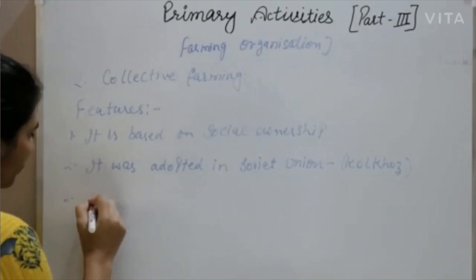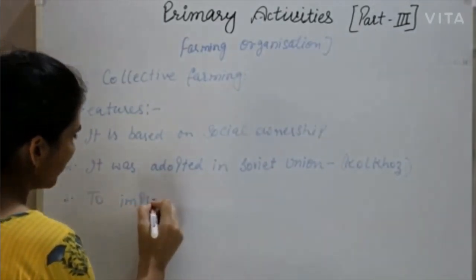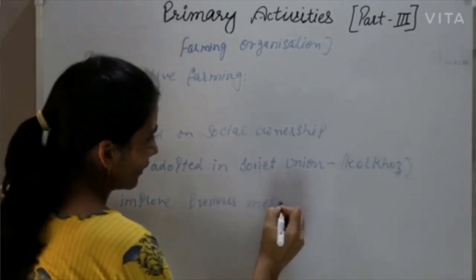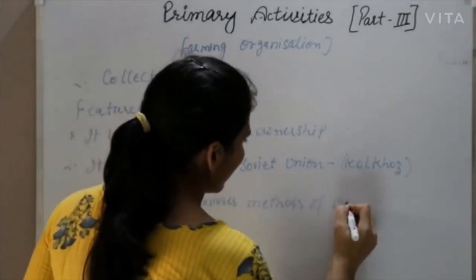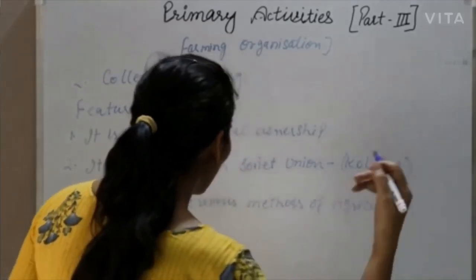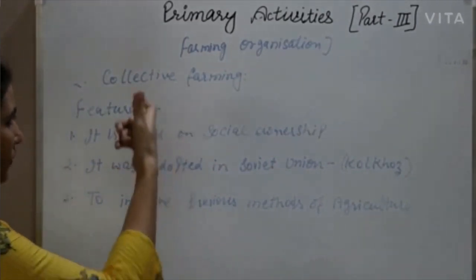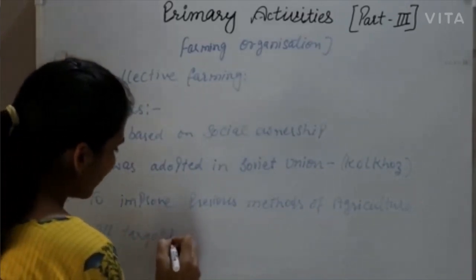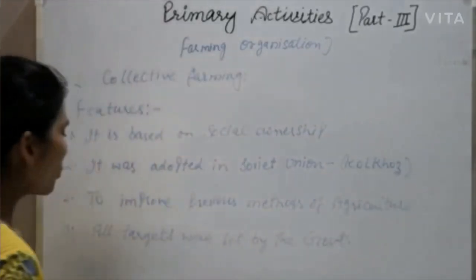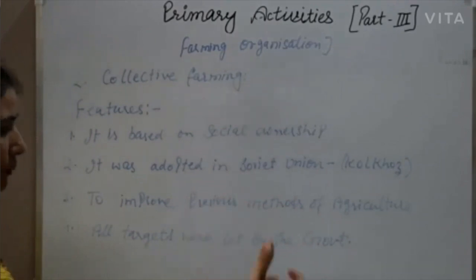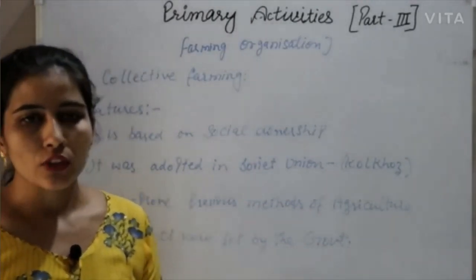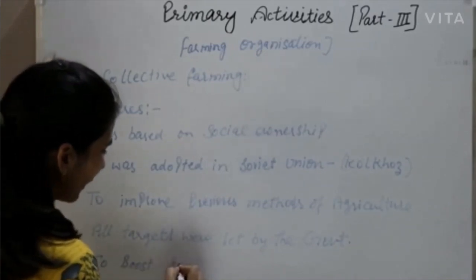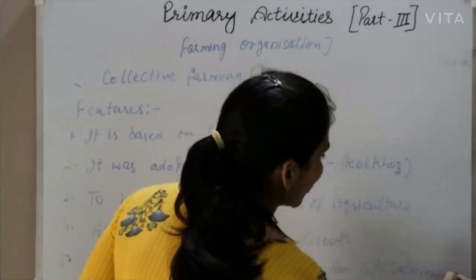The third point is to improve previous methods of agriculture through collective farming. The fourth point is that all targets were set by the government — no work was done individually. The fifth point is to boost agricultural production for self-sufficiency, so that all the needs of members doing collective agriculture are fulfilled.